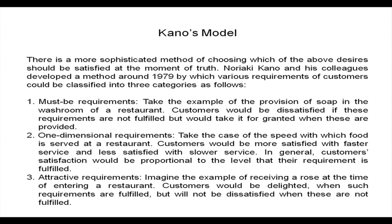However, when expectations may not point towards a single mostly-demanded desire, we move on to the Kano's model, which is a sophisticated method of choosing which desires to satisfy at the moment of truth. Noriyaki Kano and his colleagues developed this method around 1979, by which various requirements of customers could be classified into three categories: must-be requirements, one-dimensional requirements, and attractive requirements.